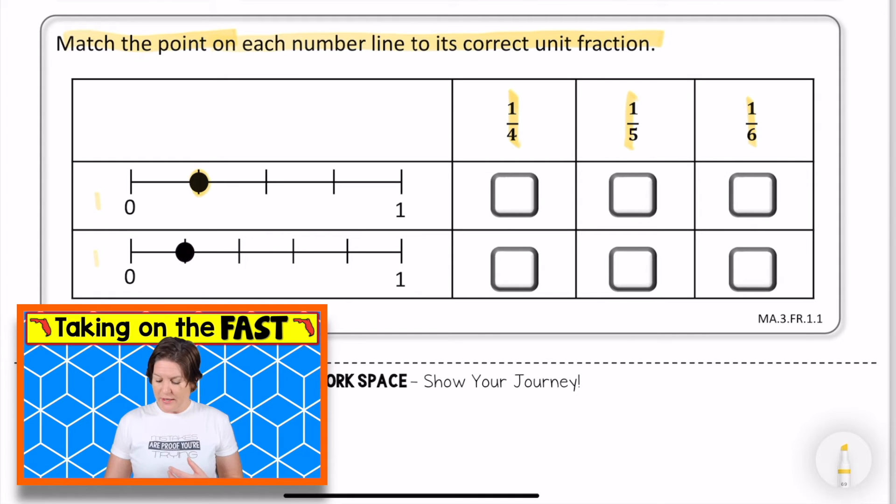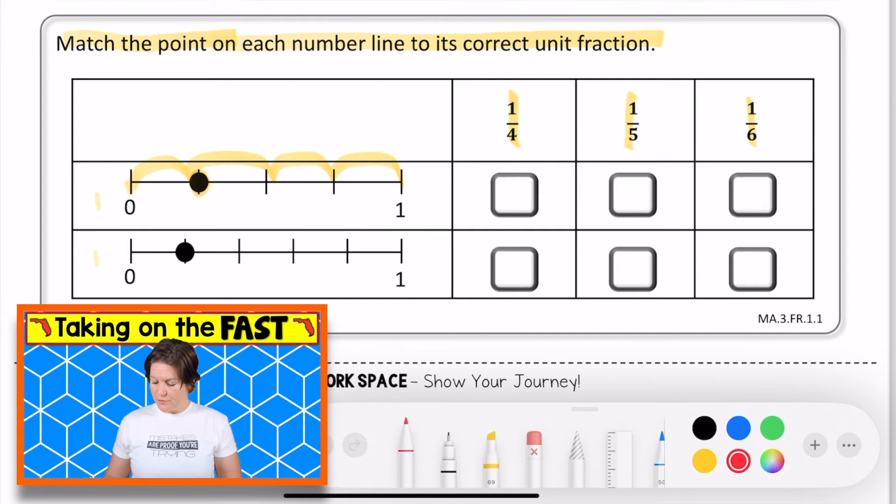So here we have the point right there at the first hop over, and it is out of one, two, three, four parts. So for this one, I would mark one fourth.